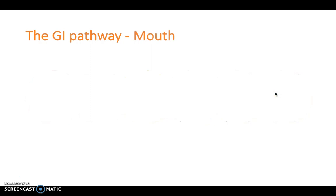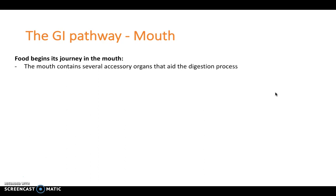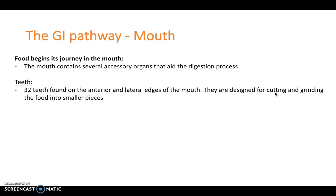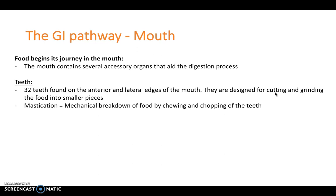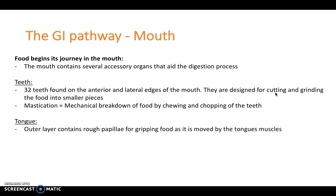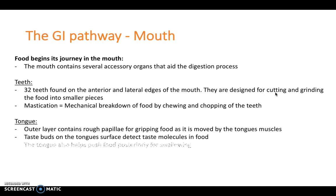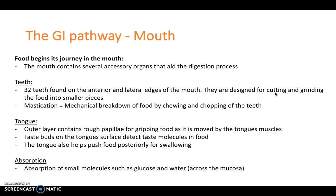The GI pathway starts in the mouth, where several accessory glands and organs aid the digestive process: the teeth, tongue and salivary glands. We have 32 teeth on the anterior and lateral edges of the mouth designed to cut and grind food into smaller pieces. Mastication is the mechanical breakdown of food by chewing. The tongue's outer layer contains rough papillae for gripping food, has taste buds to detect taste molecules, and helps push food posteriorly for swallowing. Small molecules such as glucose and water can also be absorbed across the mucosa.